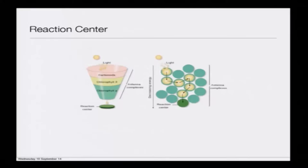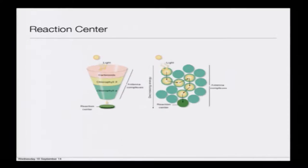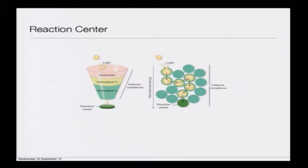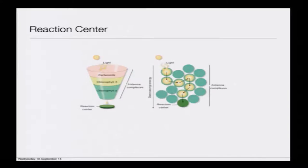Looking at a side-by-side picture: light goes through carotenoids, chlorophyll b, chlorophyll a, and reaches the reaction center. At the molecular level, there is motion in the antenna complex, and at the reaction center the reaction is getting initiated.